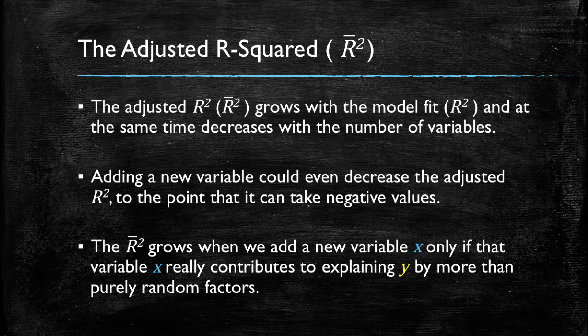When working with the adjusted r-squared, adding a new variable could even decrease its value, to the point where the adjusted r-squared becomes negative. This is because of the penalties of adding useless variables. The adjusted r-squared will grow when we add a new variable only if that new variable does contribute to explaining the dependent variable more than what could happen just by purely random factors. So if we find that some particular variable has nothing to do with the dependent variable, but adding it increases the r-squared just by mere coincidence, by chance, by random factors, the adjusted r-squared will discover this and penalize us for this.